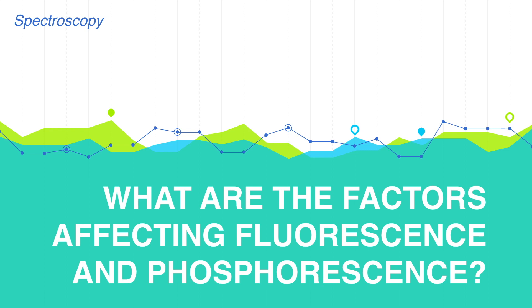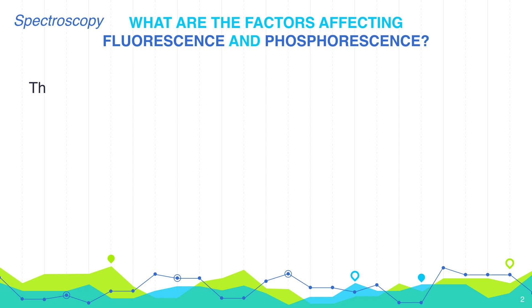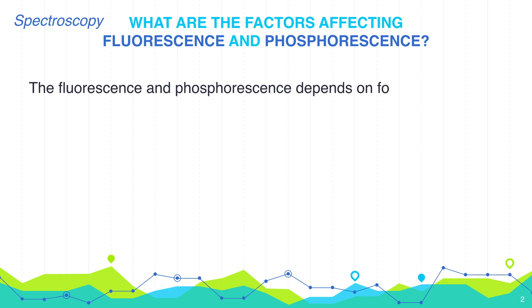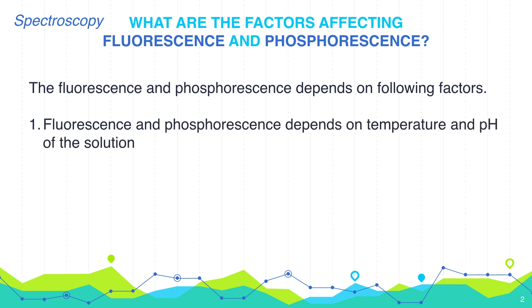What are the factors affecting fluorescence and phosphorescence? Fluorescence and phosphorescence depend on the following factors: temperature and the pH of the solution.